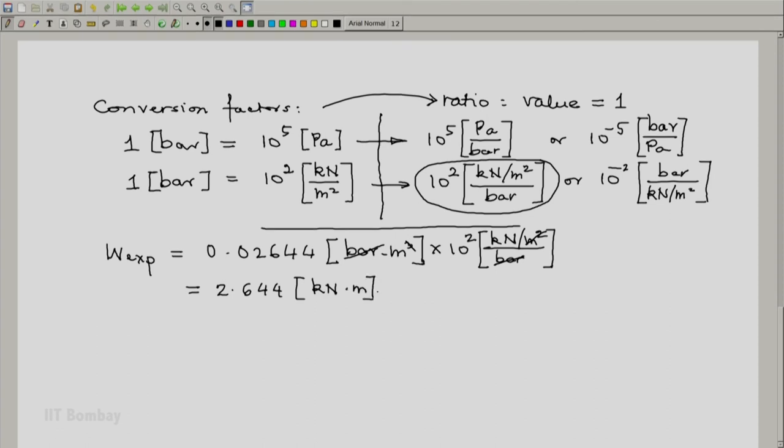We know a Newton meter is known as a joule, so a kilo Newton meter is a kilojoule. So we write this as 2.644 kilojoule.